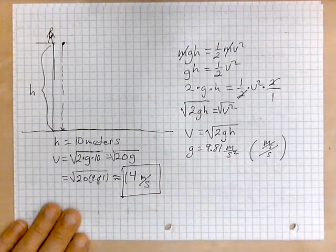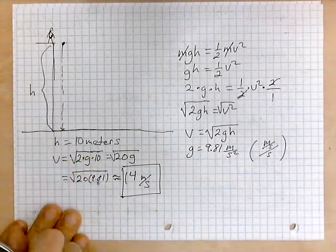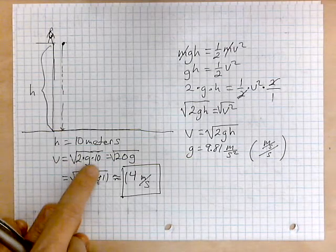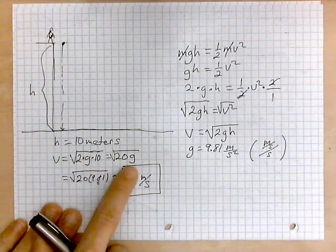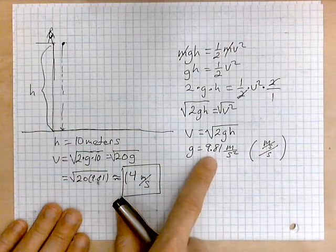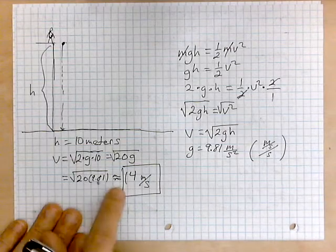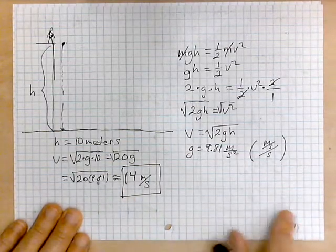So to make it more concrete, H could be 10 meters. And the velocity is the root of 2 times G times 10, which is the root of 20 G. Then we replace G with 9.81. And the calculator tells us that this is equal roughly to 14 meters per second.